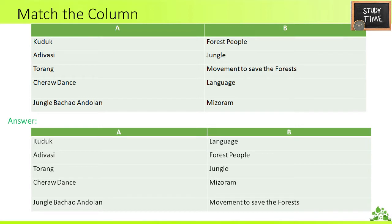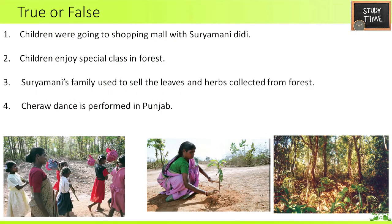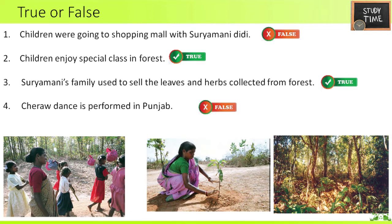True or False: First — children were going to a shopping mall with Suryamani Didi: False. Second — children enjoy a special class in forest: True. Third — Suryamani's family used to sell the leaves and herbs collected from forest: True. Fourth — Cheer of dance is performed in Punjab: False.